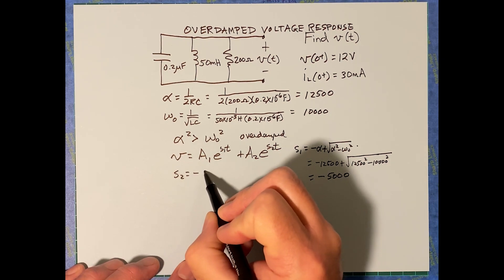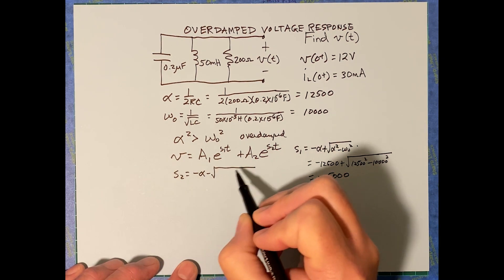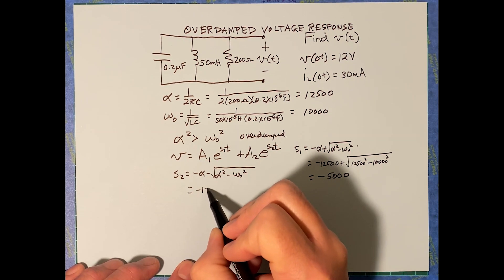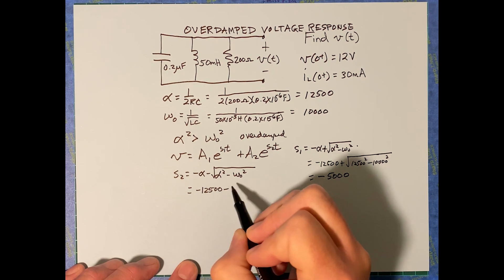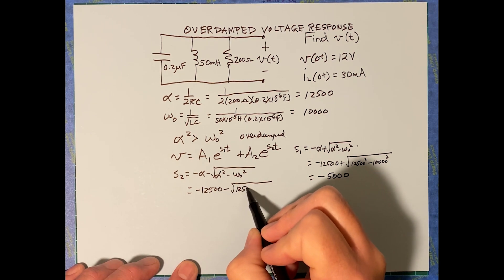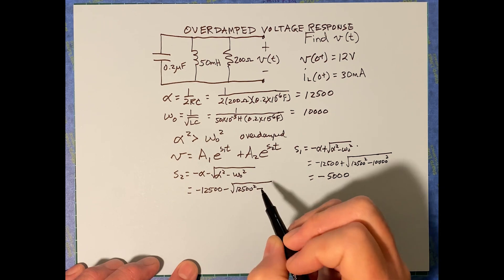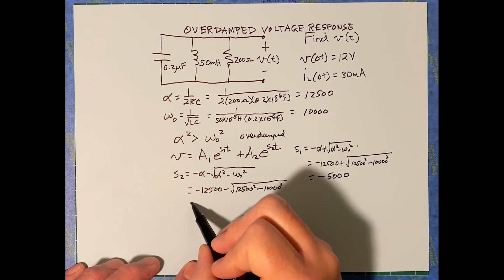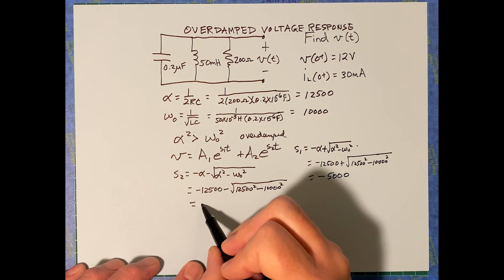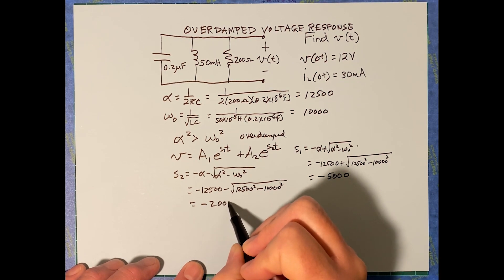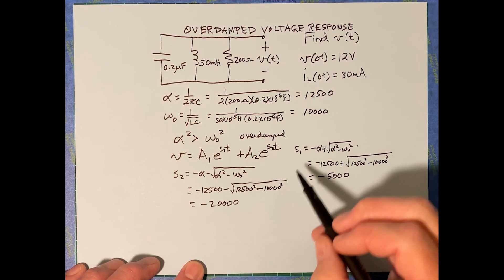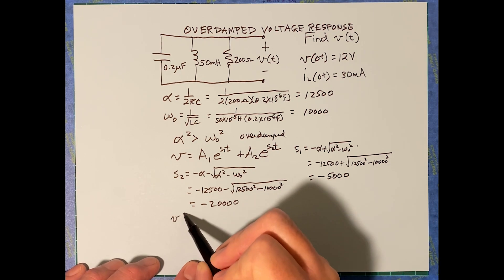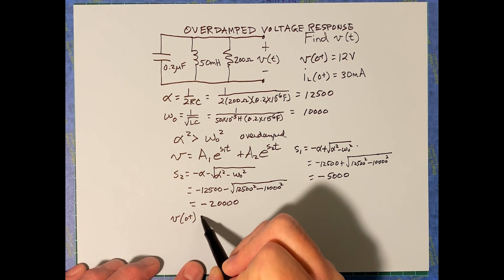Now for s2, it equals negative alpha minus the square root of alpha squared minus omega-naught squared, which is negative 12,500 minus the square root of 12,500 squared minus 10,000 squared. That calculation gives us negative 20,000. So s1 equals negative 5,000 and s2 equals negative 20,000.